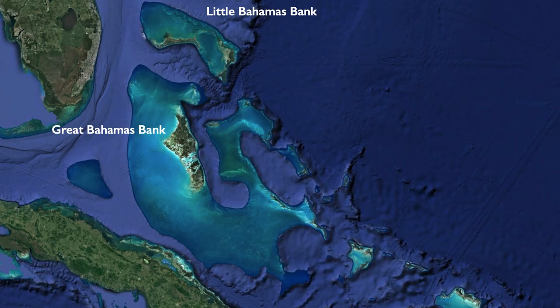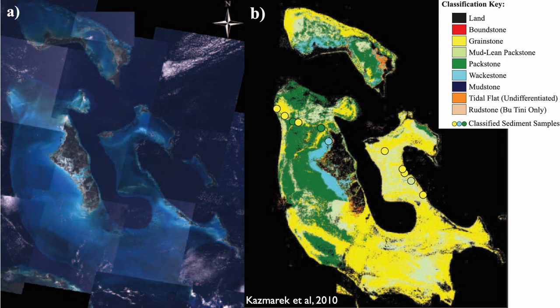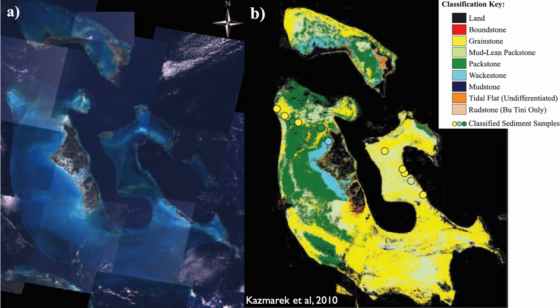Let's look at the Great Bahamas Bank and the type of sediment we see there. I'm showing you work from Steve Kazmarek, published in 2010. On the left is satellite imagery of the Great Bahamas Bank, and on the right is his interpretation of the types of facies you can expect. One striking observation: we don't see a lot of boundstone. Boundstone is in red, land is in black. There are reefs in the Bahamas, but in terms of volume, the reef does not represent a large volume of the modern Bahamas.